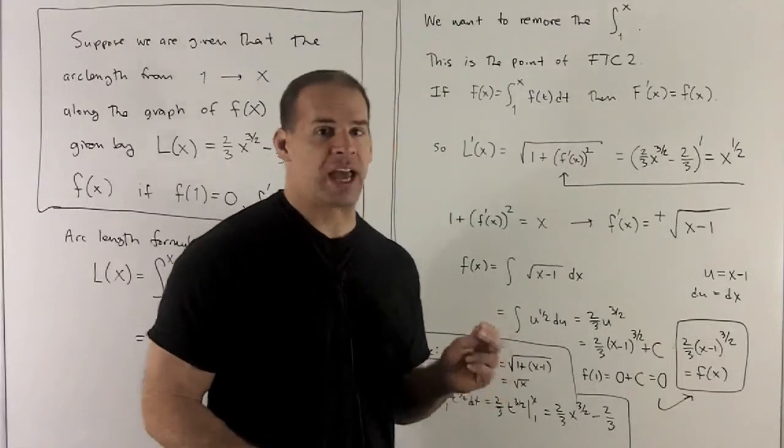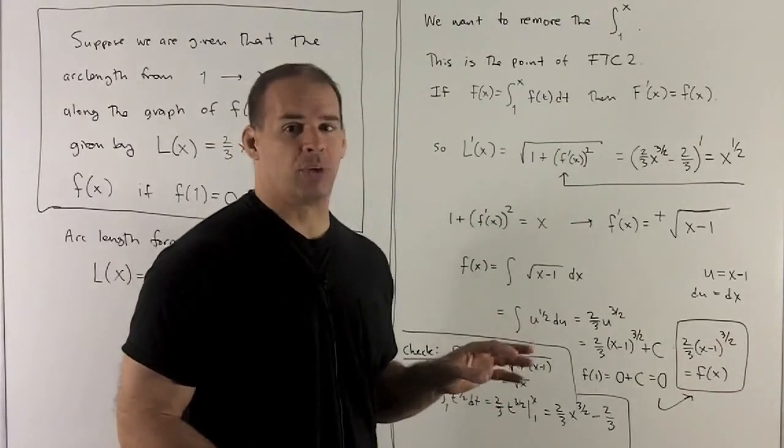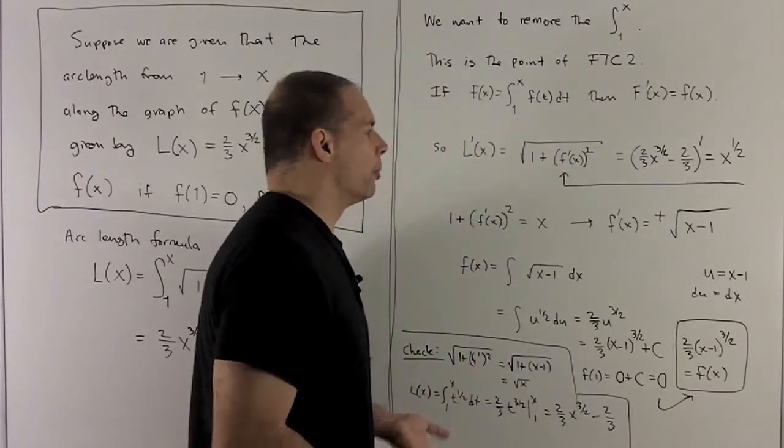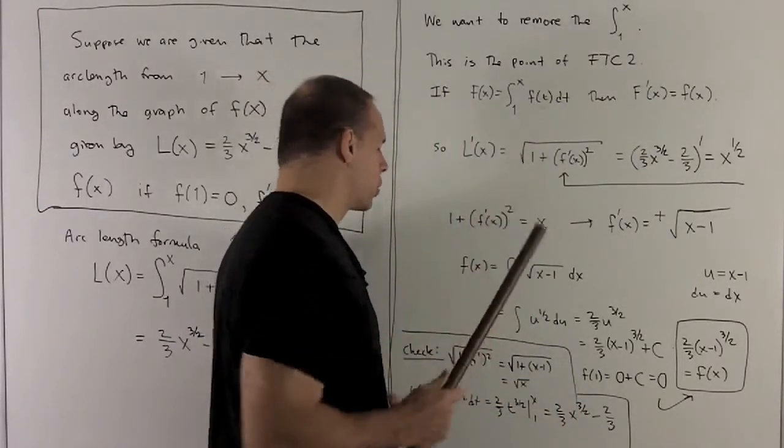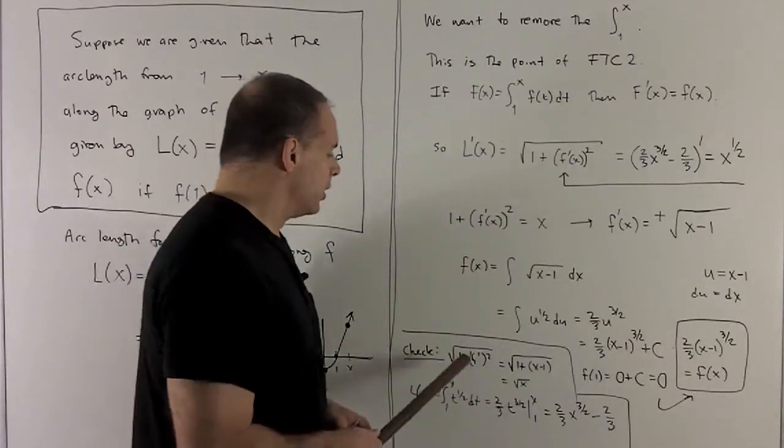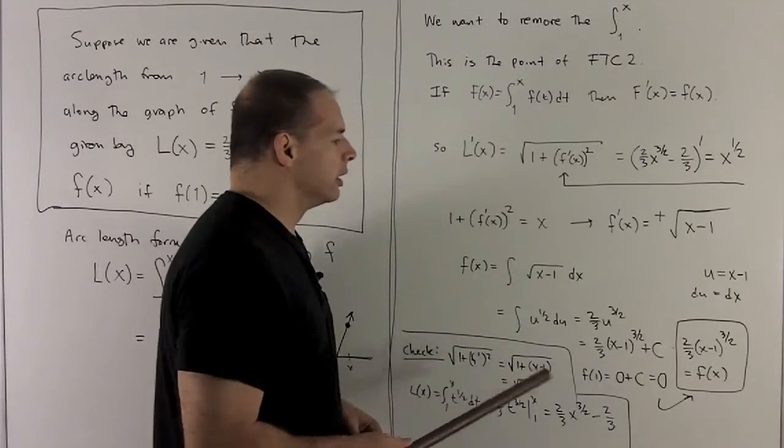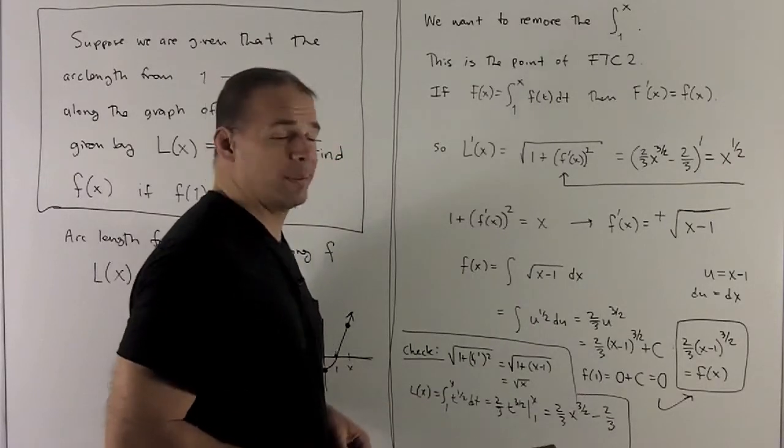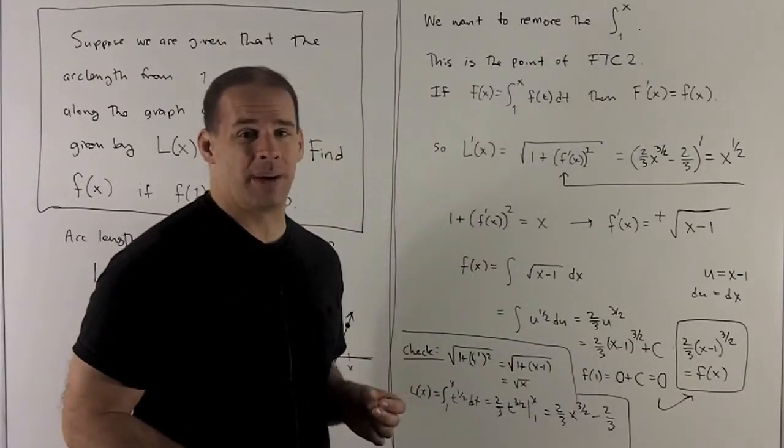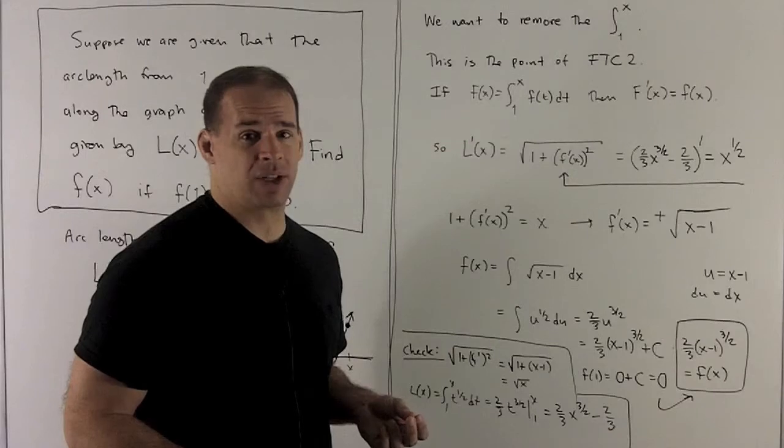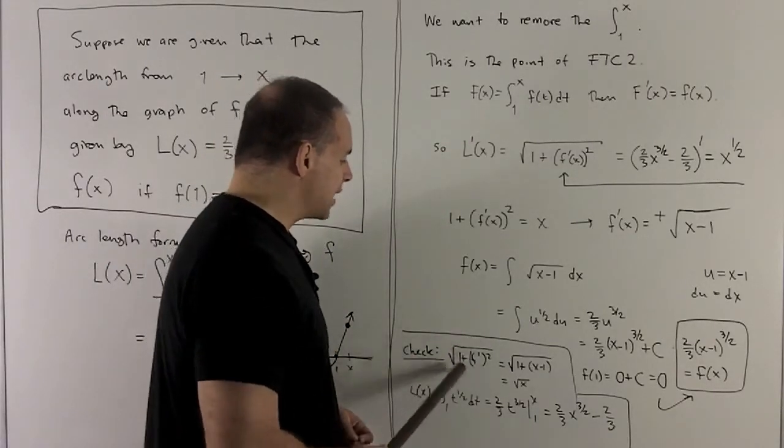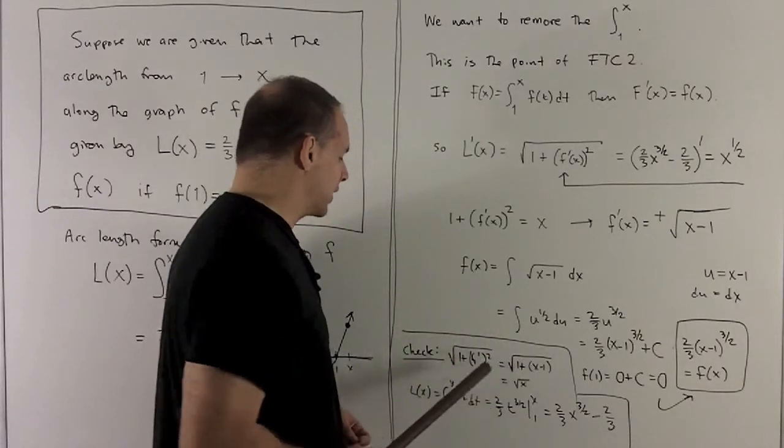Now, we can check this just by going back and recomputing to see if we can recreate this. All we're going to do is go back up the board in reverse order. So let's do that. So 1 + f'^2. Well, f' is just going to be bring the 3/2 down, subtract 1. So it's sqrt(x - 1). We square it. It gives me x - 1. I add 1. That gives me x. So our gadget for arc length is just going to be sqrt(x).